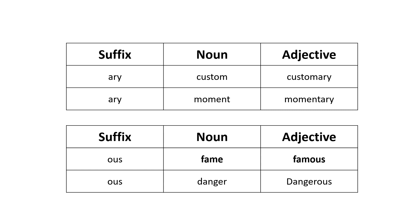The next suffixes are '-ary' and '-ous'. Adding '-ary': custom → customary, moment → momentary. Adding '-ous': fame → famous, danger → dangerous. Again, we have a word ending with 'e' — 'fame'. So we remove the 'e' and add the suffix '-ous'. Remember, words ending with 'e' or 'y' are exceptions. Only from the base word, you remove the 'e' or 'y' to which the suffix should be added to form the adjective.